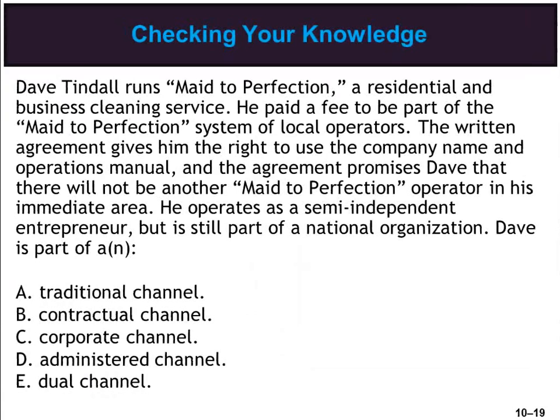Dave Tindall runs Made to Perfection, a residential and business cleaning service. He paid a fee to be part of the Made to Perfection system of local operators. The written agreement gives him the right to use the company name and operations manual, and promises that there will be no other Made to Perfection operator in his immediate area. He operates as a semi-independent entrepreneur but is still part of a national organization. Dave is part of a contractual channel, where channel members agree by contract to cooperate with each other. Most franchise systems are examples of contractual channels.